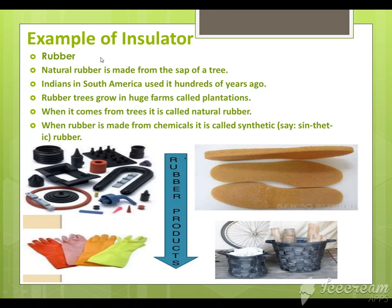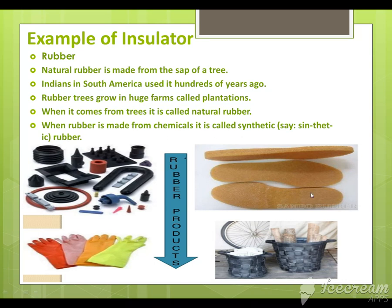Rubber products are also insulators. Natural rubber is made from the sap of a tree and was used by Indians in South America hundreds of years ago. Rubber trees grow in huge farms called plantations. When it comes from trees, it is called natural rubber, and when rubber is made from chemicals, it is called synthetic rubber.